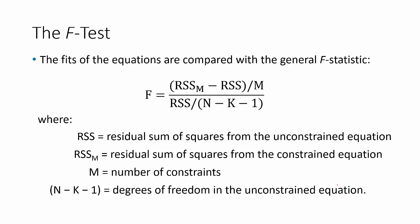The F-statistic is calculated by running two separate regressions and recording several variables and then making the calculation shown on screen. We will run the unconstrained regression and record the residual sum of squares from it. That regression will include all the x variables we think should be in the model. Then we'll run the regression again, leaving out those variables we want to test. The second model will be called the constrained equation, and from that we will also record the residual sum of squares, referred to as the residual sum of squares sub M for that constrained equation.